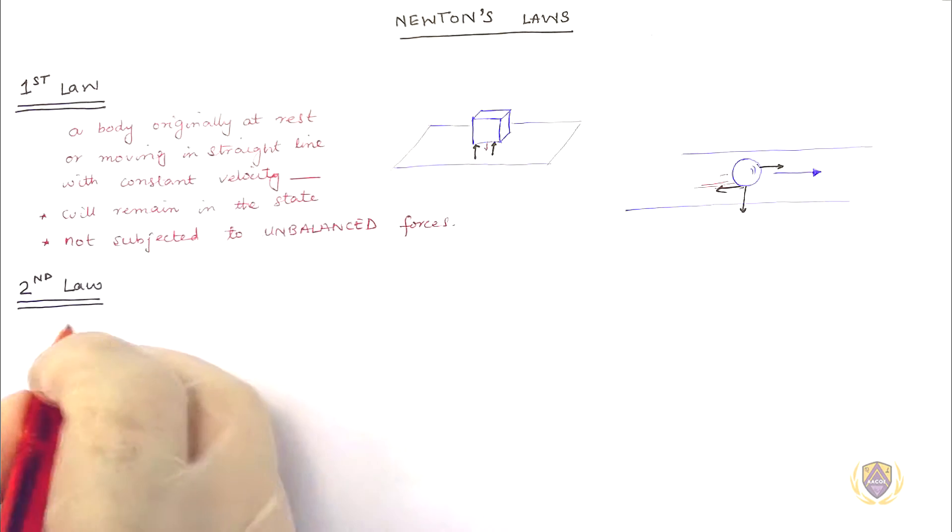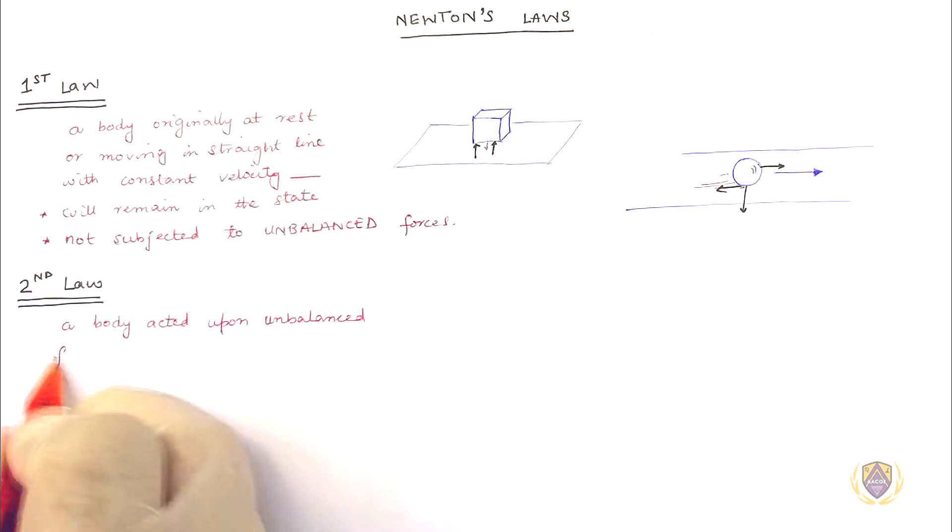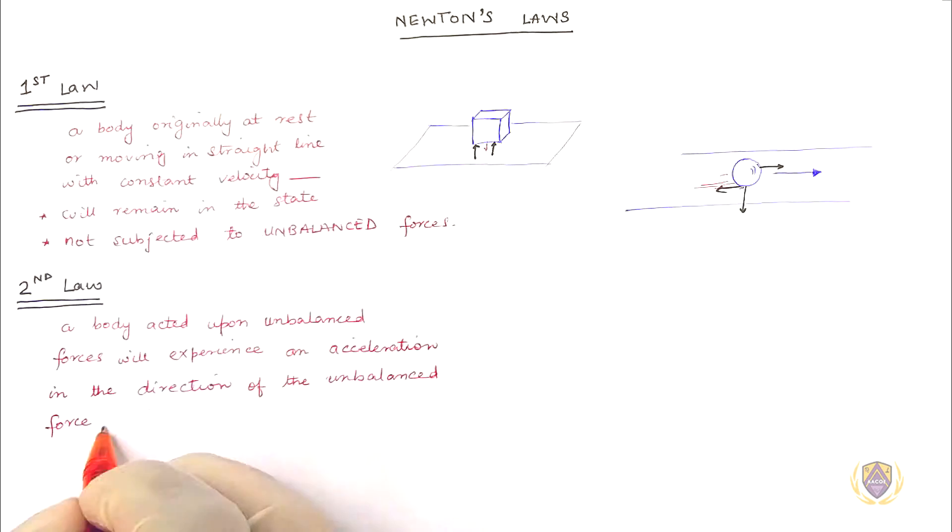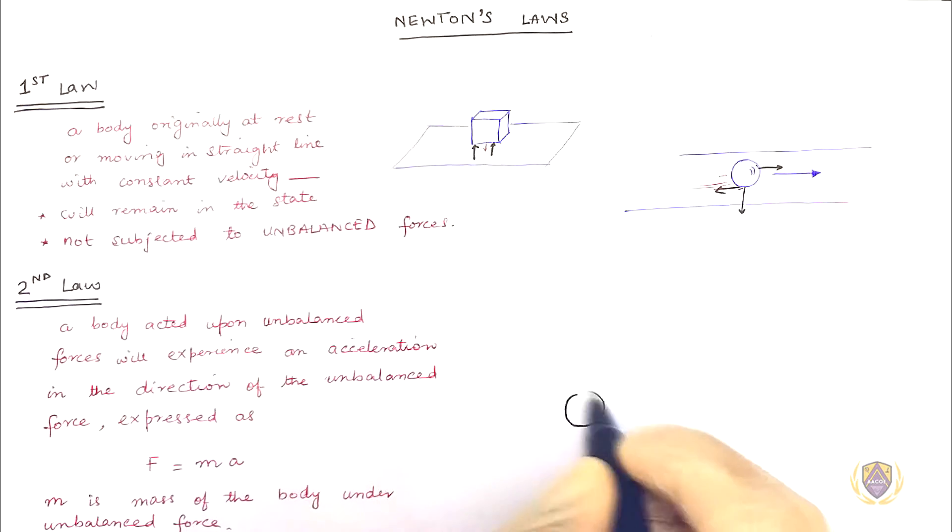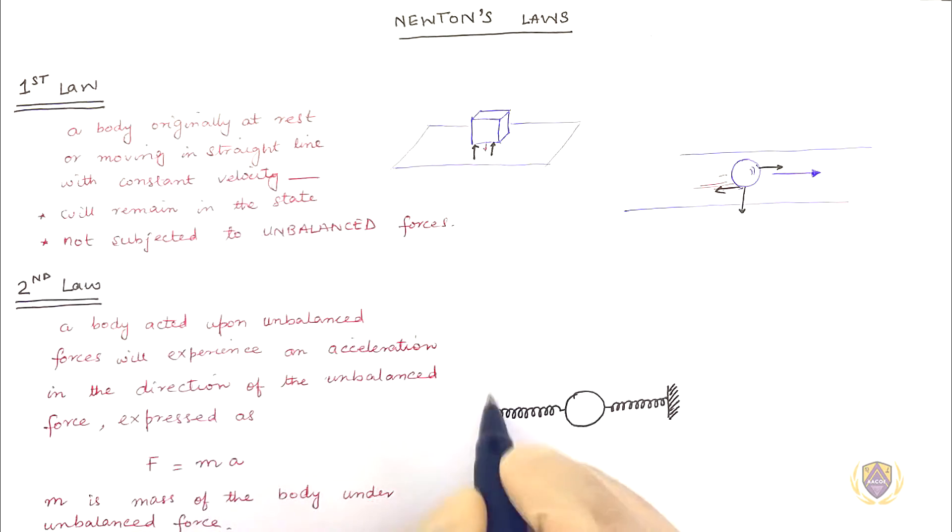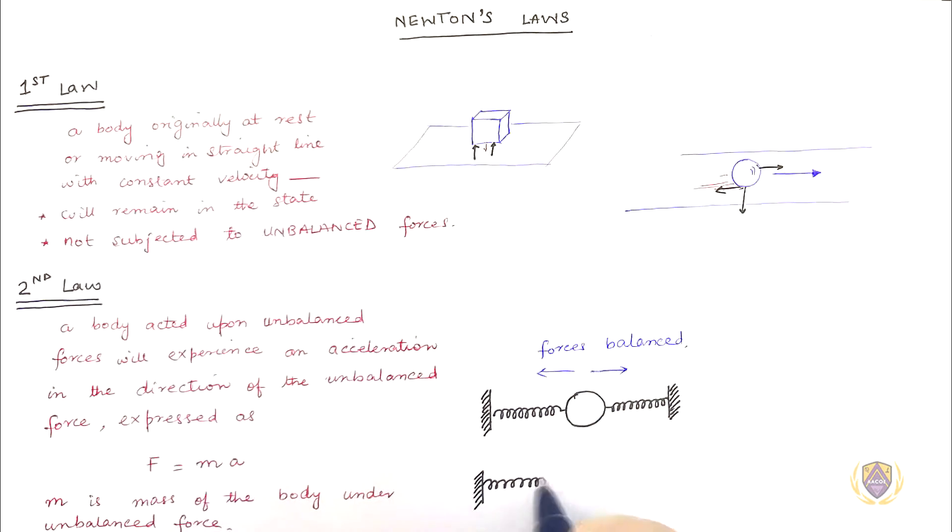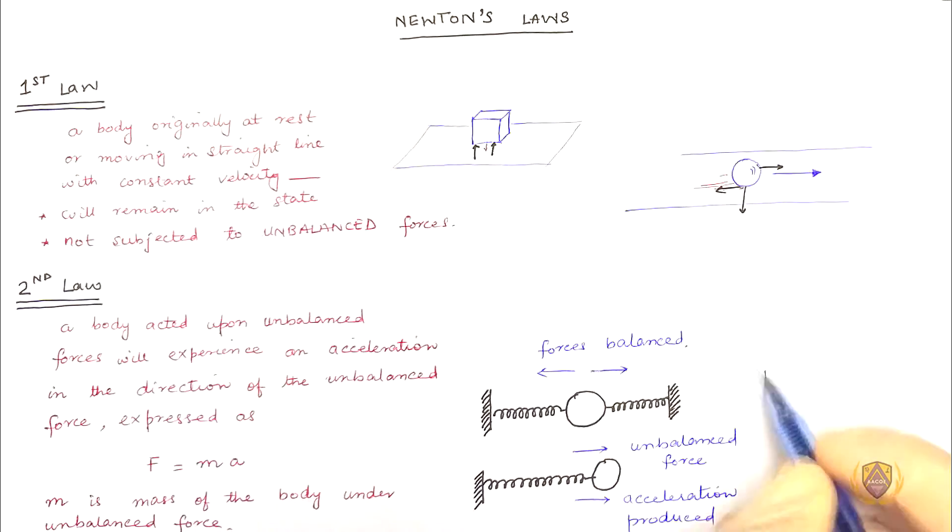Second Law: A body acted upon by unbalanced forces will experience an acceleration in the direction of the unbalanced force, expressed as F equals M A, where M is the mass of the body under unbalanced force. Consider two springs pushing a sphere from both sides equally such that the forces are balanced. When one of the spring is removed, the unbalanced force produces acceleration in the same direction of the unbalanced force.